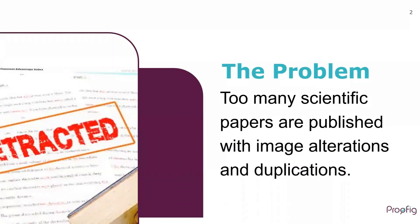The problem: too many scientific papers are being published with image alterations and duplications. This can lead to costly investigations and retractions that impact the reputation of all parties involved — authors, editors, and publishers. Beyond that, it harms the public trust in science.